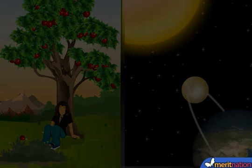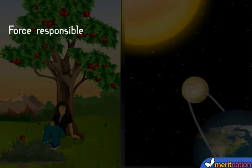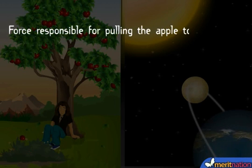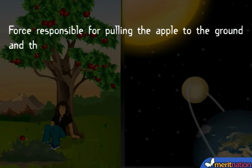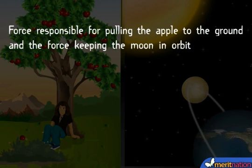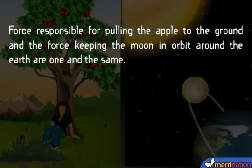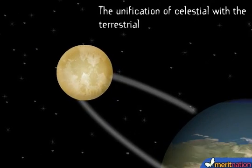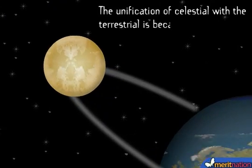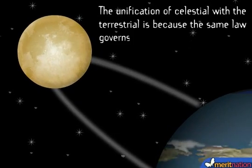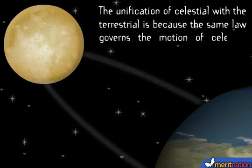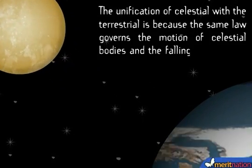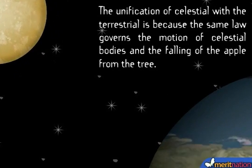Newton proclaimed that the force responsible for pulling the apple to the ground, and the force keeping the moon in orbit around the earth, are one and the same. The unification of celestial with the terrestrial is because the same law governs the motion of celestial bodies and the falling of the apple from the tree.